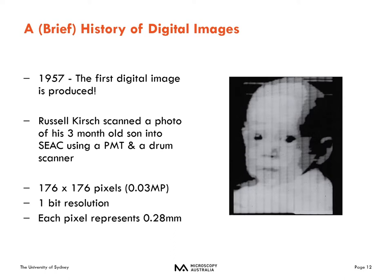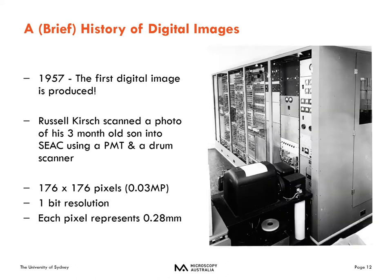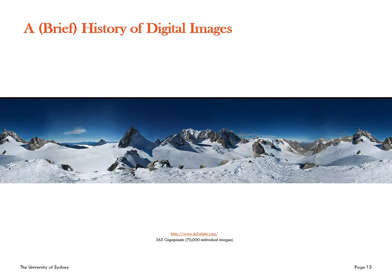Before heading further, let's look at a brief history of digital images. The first digital photo was taken in 1957 when Russell Kirsch made a 176 by 176 pixel digital image by scanning a photograph of his three-month-old son. The low resolution was due to the fact that the computer they used wasn't capable of storing any more information. He used a Standard Electronic Automatic Computer (SEAC) and a PMT and drum scanner. It was a massive 0.03 megapixels and had a one-bit resolution. The SEAC computer was huge.